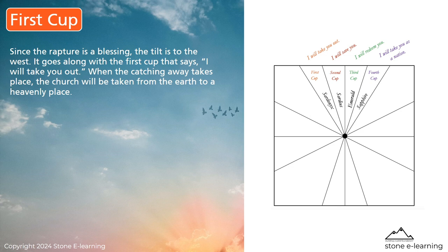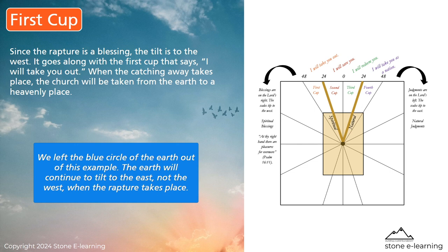Since the rapture is a blessing, the tilt is to the west. It goes along with the first cup that says, 'I will take you out.' When the catching away takes place, the church will be taken from the earth to a heavenly place. We left the blue circle of the earth out of this example. The earth will continue to tilt to the east, not to the west, when the rapture takes place.